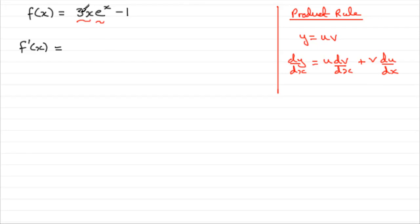We need to differentiate this first term. The u, if you like, is the 3x, and the v is the e to the x. You take one of those parts, say the 3x, and you multiply it by the differential of the other part.